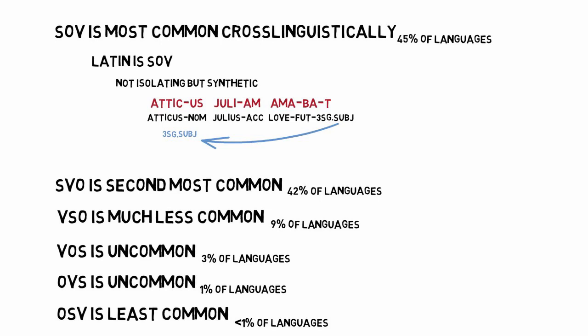These classifications refer to a language's most common or default word order, not the only possible forms. All languages are somewhat flexible. Even English can use OSV ordering in phrases like 'This I will not accept.'